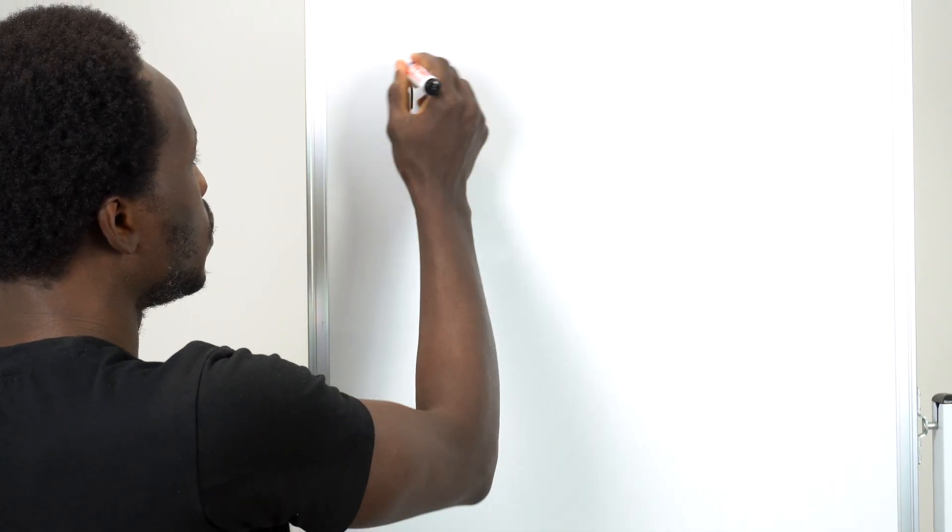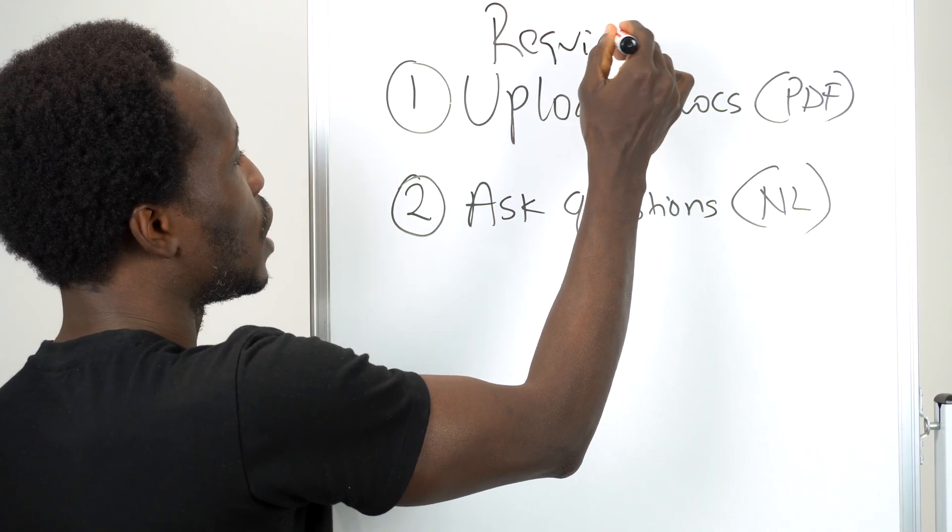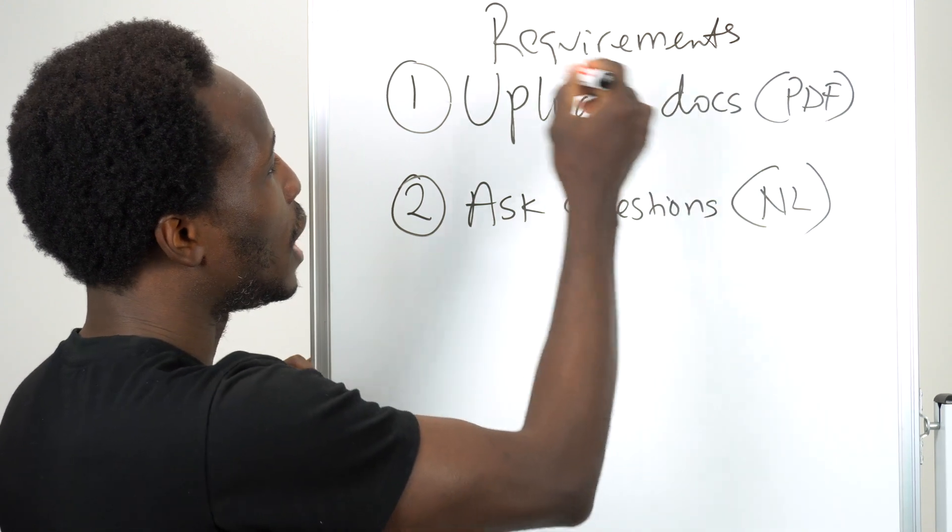So the first thing we want to be able to do with this app is we should be able to upload documents. These docs would be our PDFs. And then the second thing the app should allow us to do is we should be able to ask questions of the documents we have uploaded. And these questions should be in natural language. So ask plain English questions, and then you get your response. These are the two requirements we're going to focus on: upload documents, ask questions.